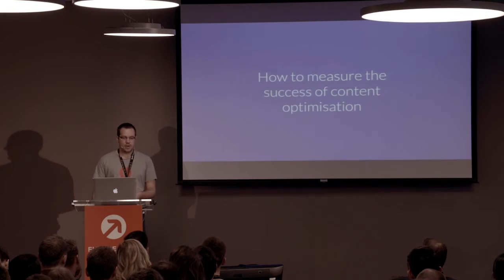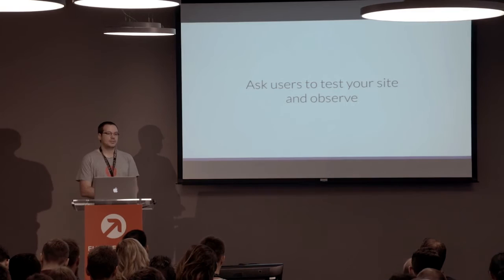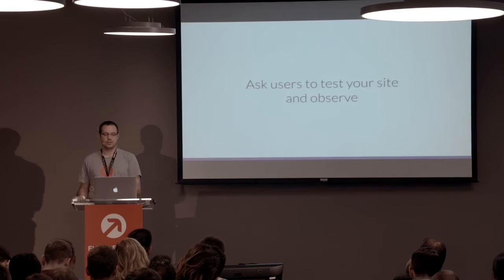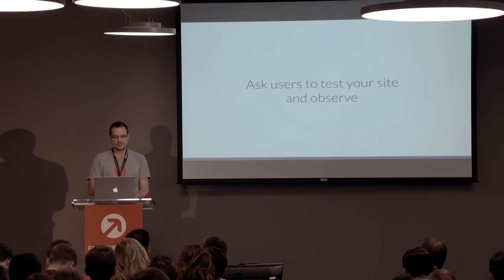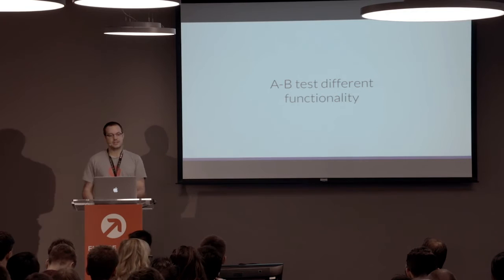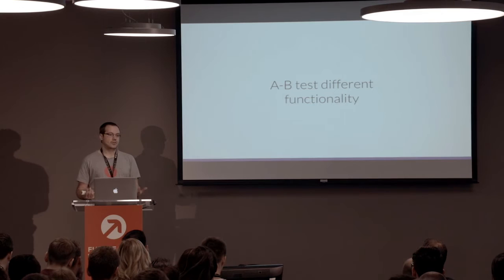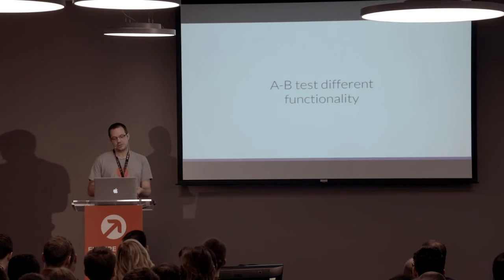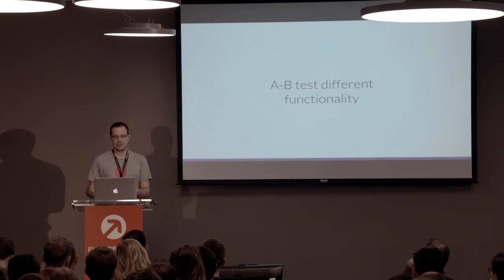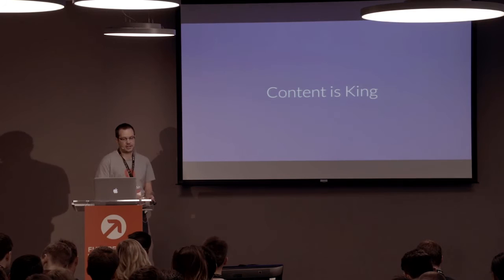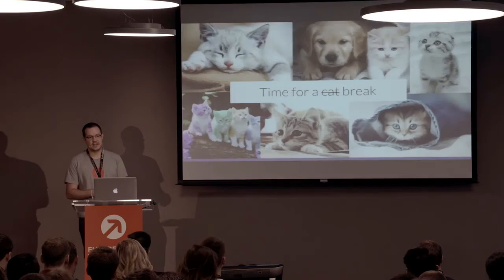Having done some content optimizations, you might ask how you can measure the success. The first way is to ask users to test your site and observe them — you can see how they interact with your optimizations, and then ask them about their experiences. An alternative that allows a much bigger sample size is to A/B test your different functionality — have two versions of the same components, alternate which is shown to different users, and measure how many proceed on an onward journey versus abandon. In summary of our content: content is king, and with approximately 35% of users not using a desktop browser, we need to ensure content is optimized for all different devices.